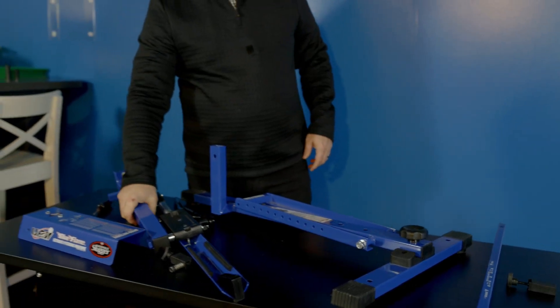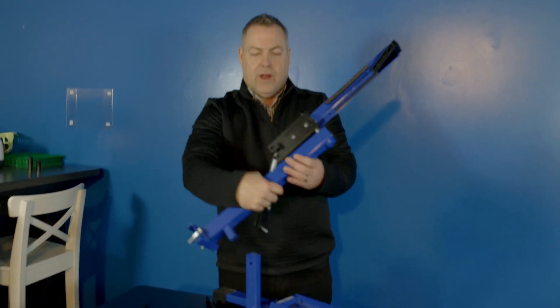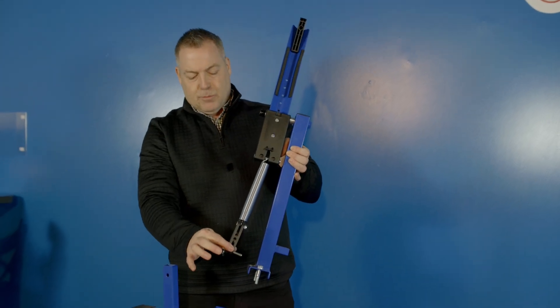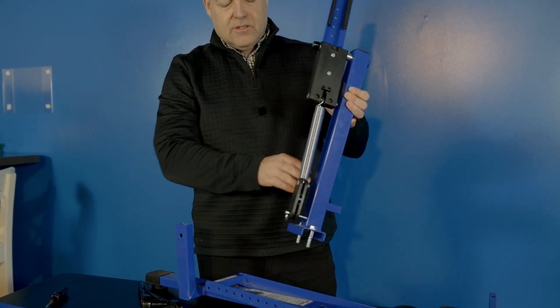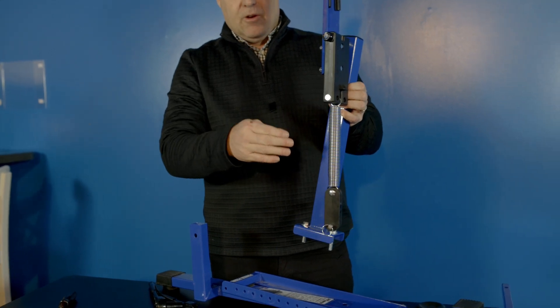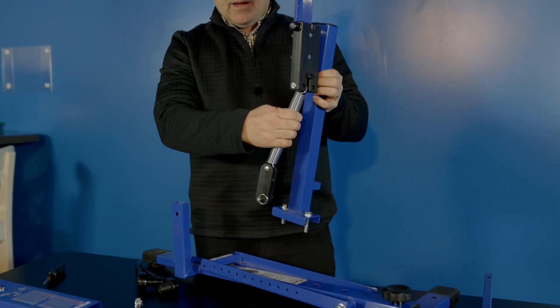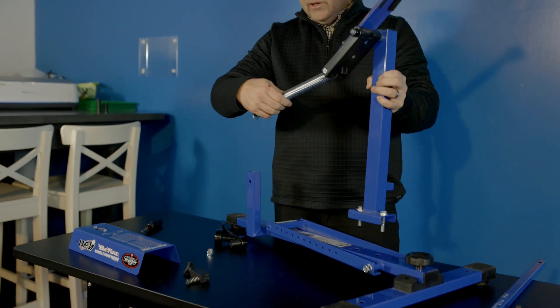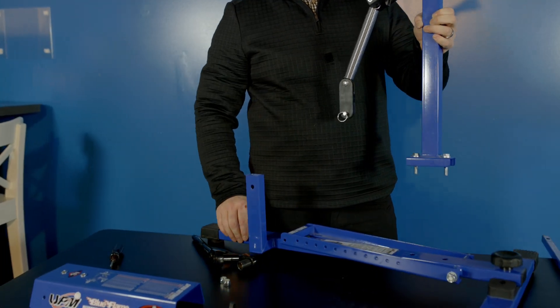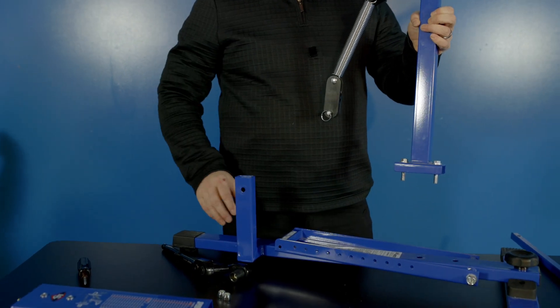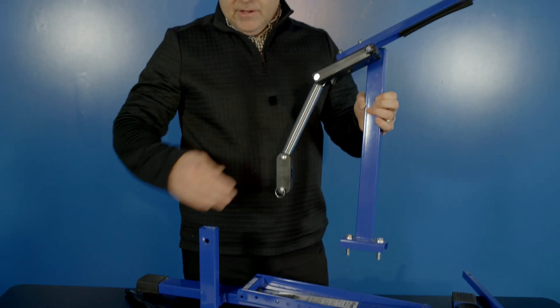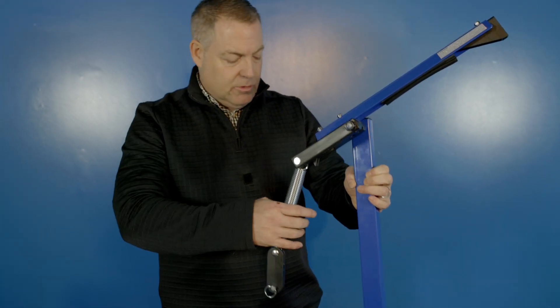And then what I'm going to do is I'm going to take the throwing arm, which is this vertical piece that has the spring attachment. Now the only consideration you want to make here is making sure that this spring is on the appropriate side of the unit. So if you look here, we have a vertical bar on one side of the main base here, and what you want to do is line up the spring to be on that side of the unit.